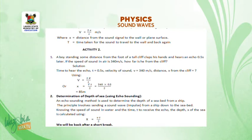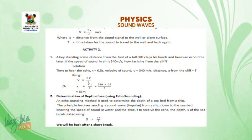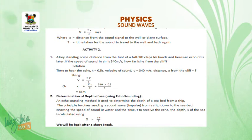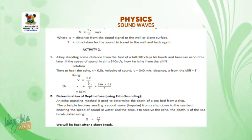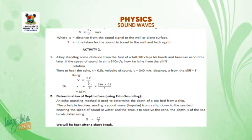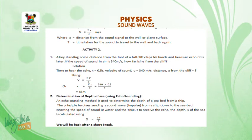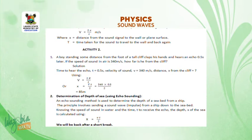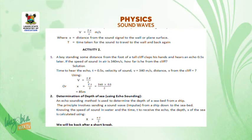Activity 2. A boy standing some distance from the foot of a cliff claps his hands and hears an echo 0.5 seconds later. If the speed of sound in air is 340 meters per second, how far is he from the cliff? Solution: time to hear the echo T = 0.5 seconds, velocity of sound V = 340 m/s. Using V = 2X/T, or X = VT/2, we substitute 340 for V and 0.5 for T, all divided by 2, to give the distance of the boy from the cliff as equal to 85 meters.